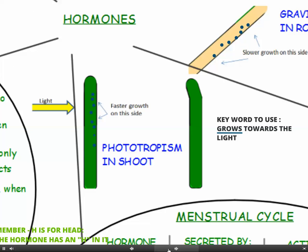This is phototropism in the shoot — the shoot growing towards the light. You can see the light is coming from the left. The auxin is unequally distributed; it collects on the shaded side of the shoot. Since auxin makes the shoots shoot up, it encourages growth on the shaded side. Faster growth on the shaded side means the shoot will start to grow towards the light.